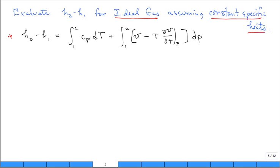So what do we know if we say it's an ideal gas? Then PV is equal to RT. If it's an ideal gas, then V is equal to RT over P.